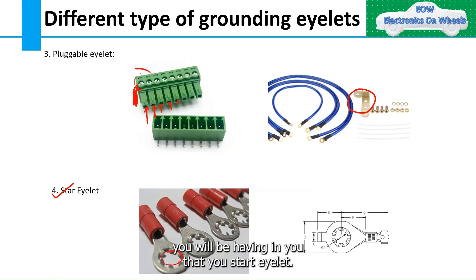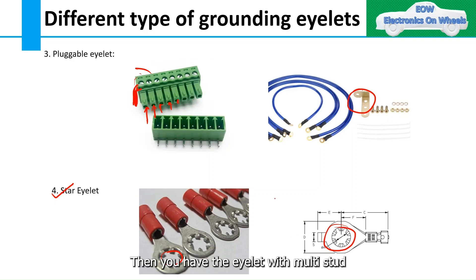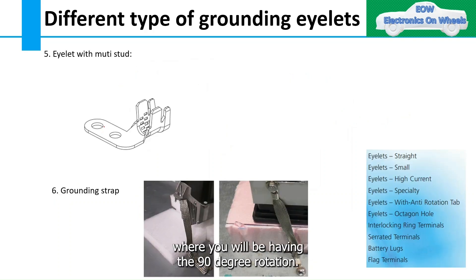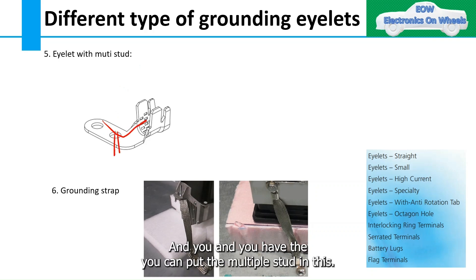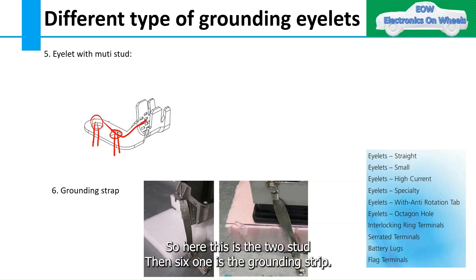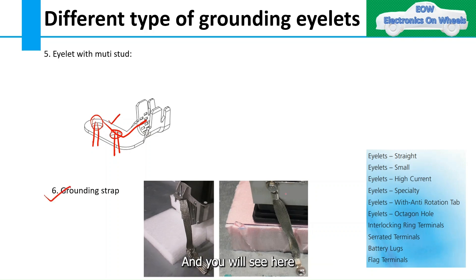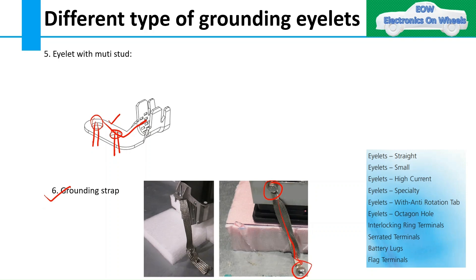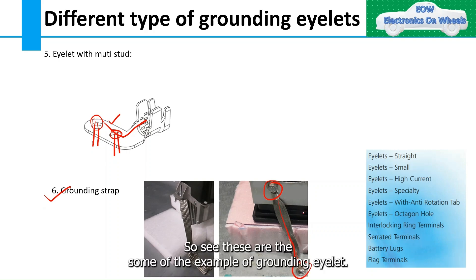The fourth one is the star eyelet, which has provisions that make it look like a star. Then you have the eyelet with multi-stud, where you have a 90-degree rotation provision and you can put multiple studs in — this example shows a two-stud configuration. The sixth type is the grounding strap, which is used for grounding purposes.